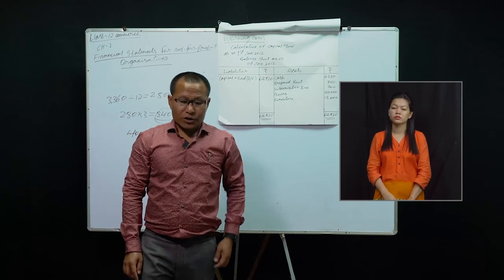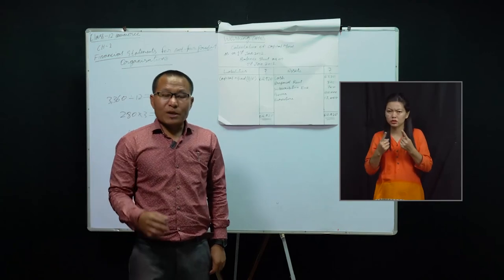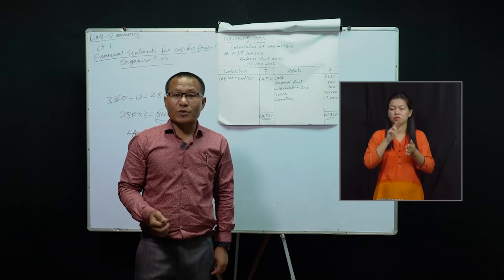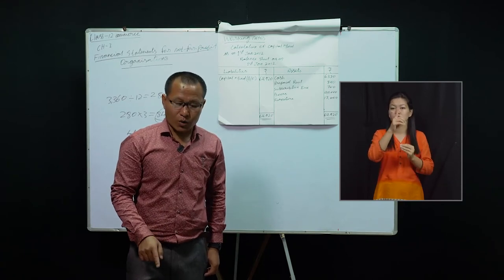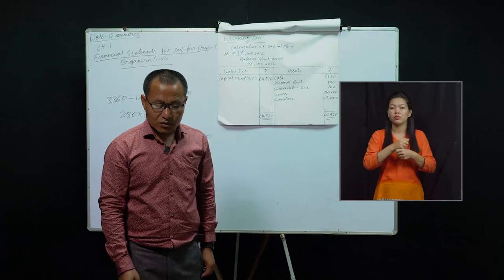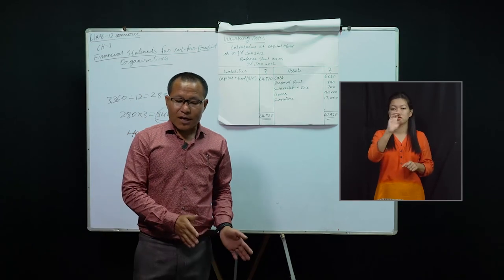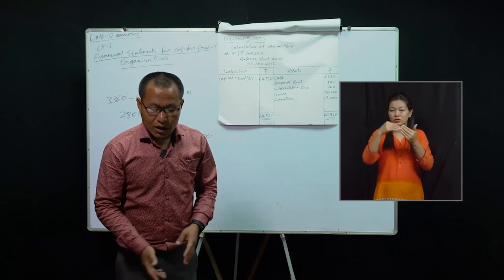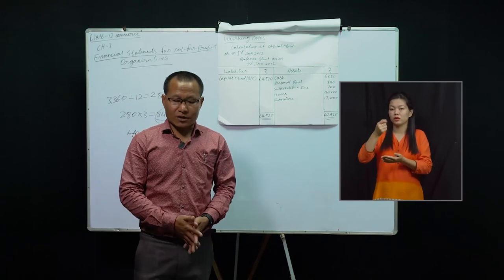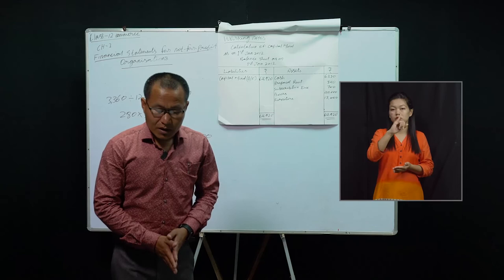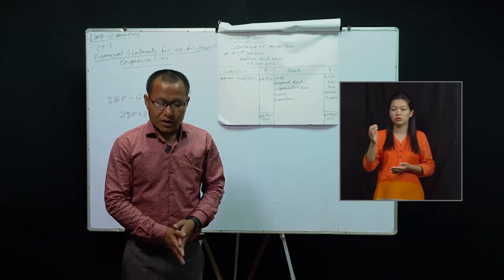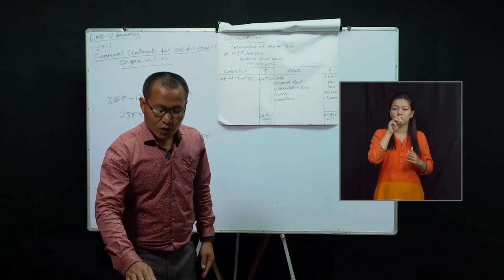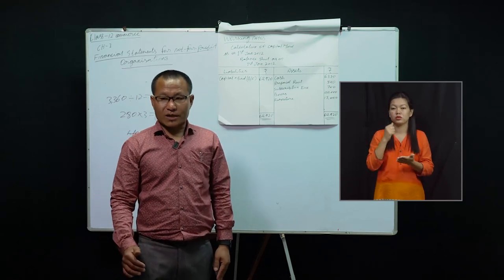When you look at the question, the building fund is given as 8,000 but must be increased to 16,000 — add 8,000 more. The receipt side and payment side of the receipts and payments account come to 76,900. If you keep 8,000 as the building fund, the receipts and payments account will not tally.